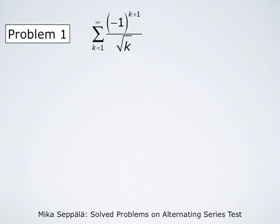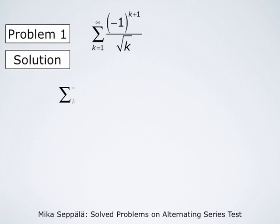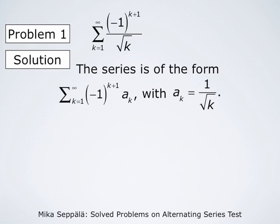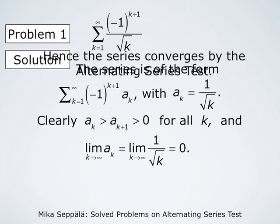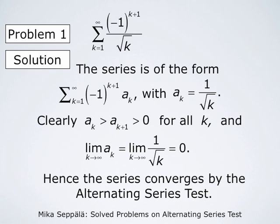As the first example, consider the series summation k from 1 to infinity of negative 1 to the power k plus 1 divided by the square root of k. This is an alternating series with ak being 1 over square root of k. All the ak's are positive and they form a decreasing sequence with limit 0. Therefore, by the alternating series test, this series converges.